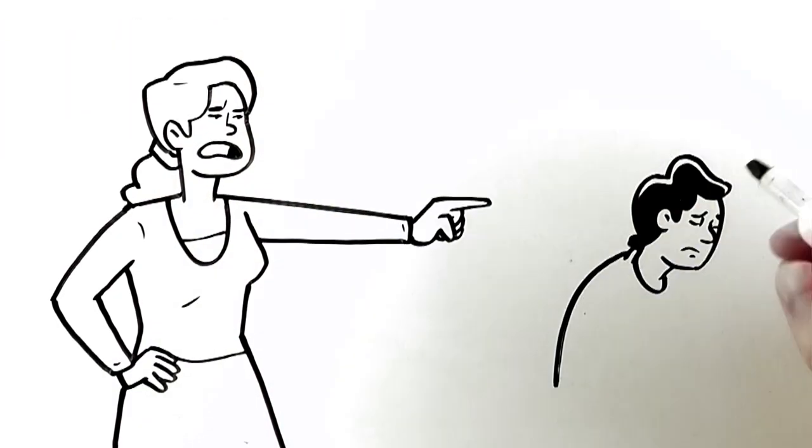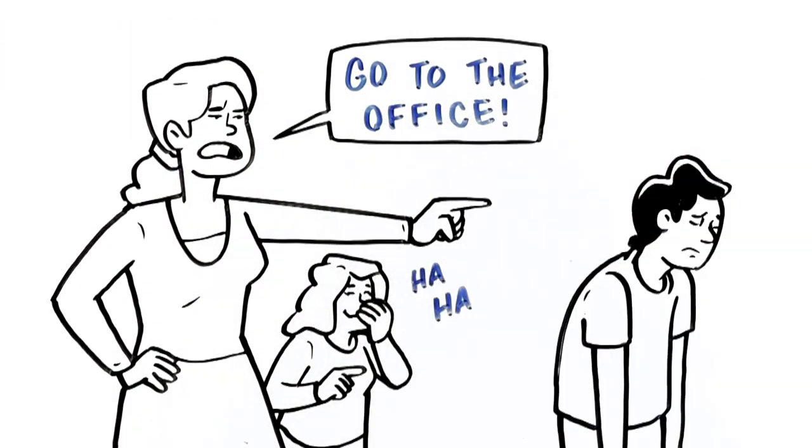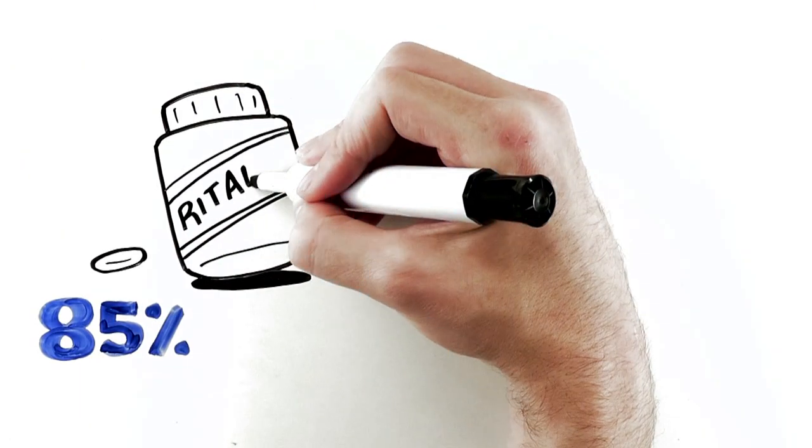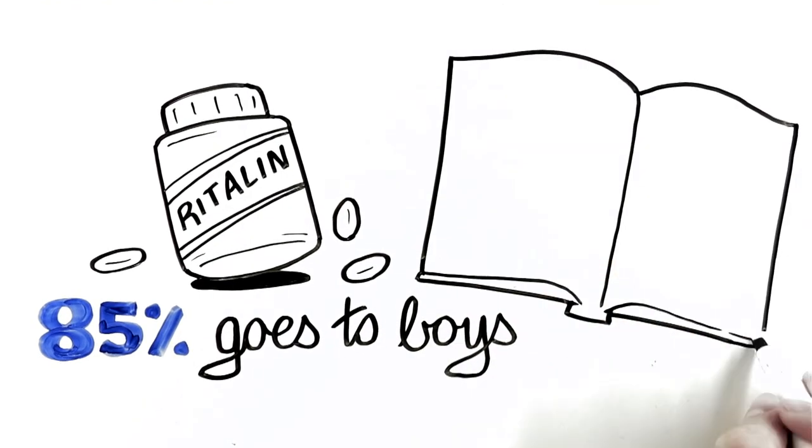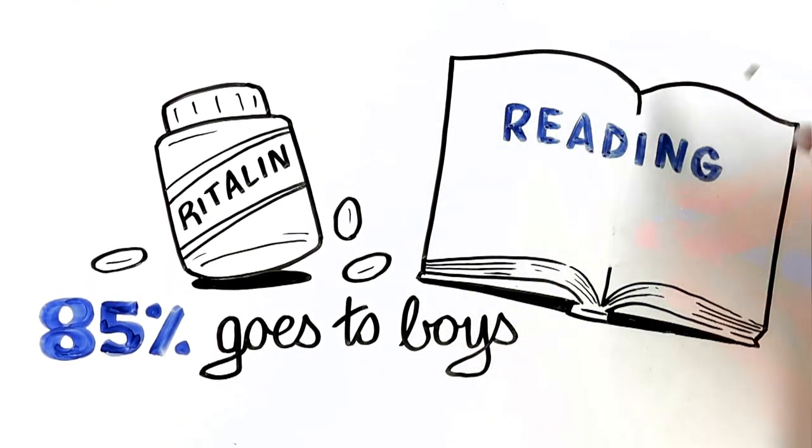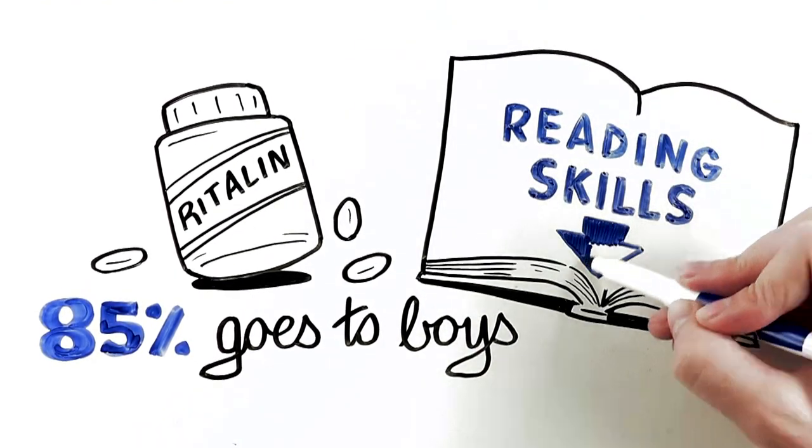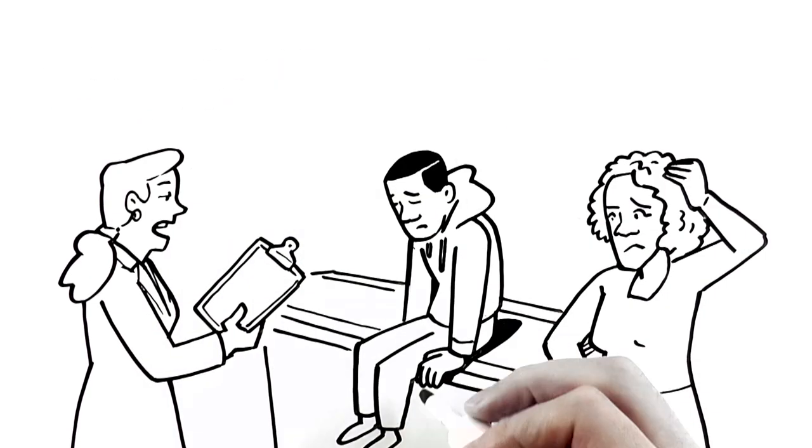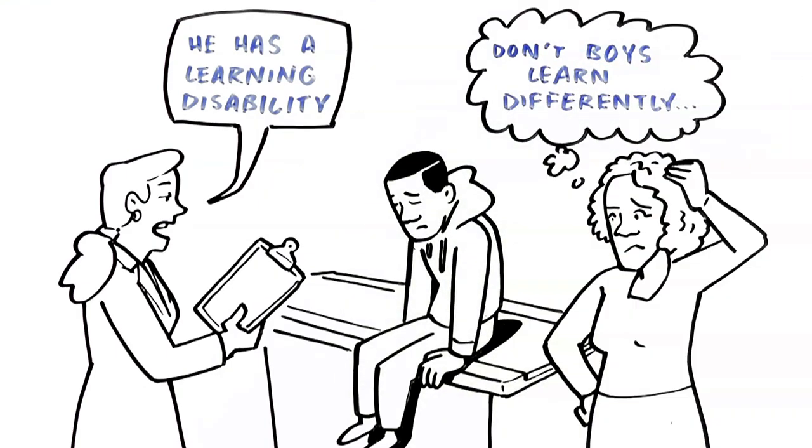Boys are four times as likely to be suspended or expelled than girls. 85% of medications like Ritalin are prescribed to boys. Over the last 20 plus years, the reading skills of the average 17-year-old boy have declined. Boys are twice as likely as girls to be diagnosed with a behavioral or learning disorder.